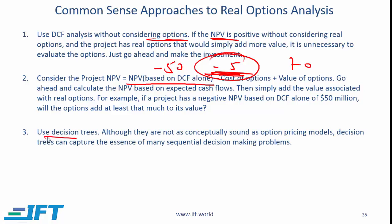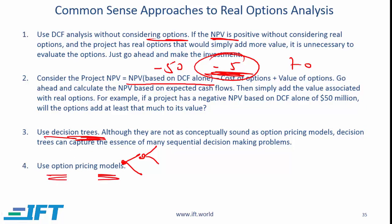Decision trees are another approach — the curriculum doesn't spend much time on this, so it won't be covered in detail here, though finance textbooks dealing with real options can cover it extensively, ultimately based on probabilities and time value of money. Finally, you can use option pricing models such as Black-Scholes or the binomial pricing model, though again that is not covered here.